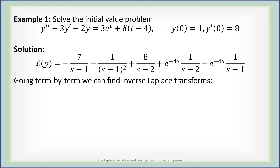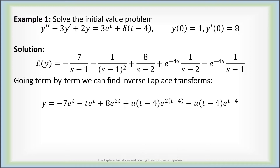Now we can just go term by term finding inverse Laplace transforms: minus 7e to the t, minus t e to the t, plus 8e to the 2t. For the exponential terms, because we have e to the minus 4s times recognizable things, the inverse Laplace transform is given by a step function times a shifted version of what we're expecting. So the inverse Laplace transform of 1 over (s minus 2) is e to the 2t, but shifted by 4 units: u of t minus 4 times e to the 2(t minus 4). Similarly we get u of t minus 4 times e to the (t minus 4). When the differential equation has an impulse forcing function, the solution will typically have step functions.